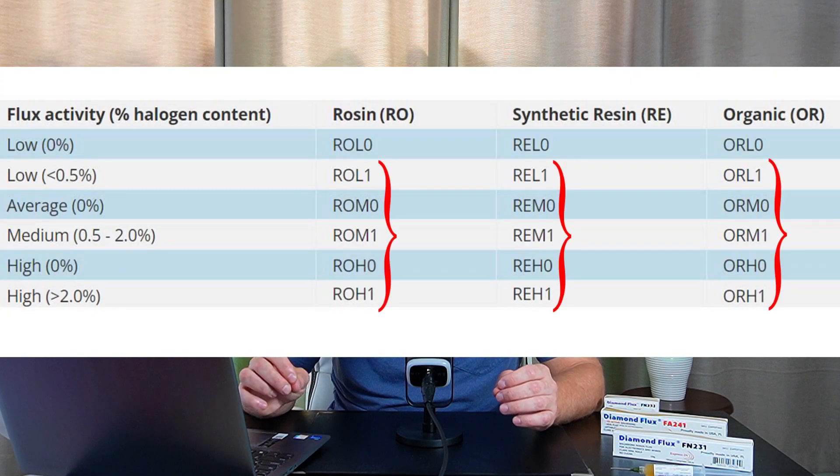A digit of '1' indicates stronger oxide removal properties. When using active fluxes classified as '1', or containing M or H, you must ensure proper cleaning. If active flux residues remain on the PCB under components or under microchips, oxidation will begin within months and your device will be covered in white or gray oxides. For new PCBs and components, it's best to use ROL0 soldering fluxes with low activity.